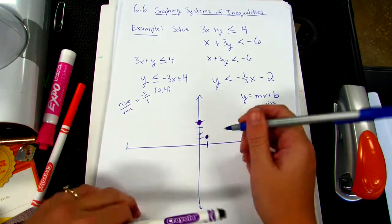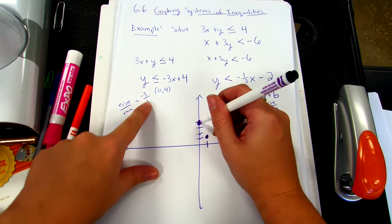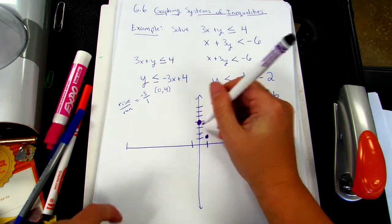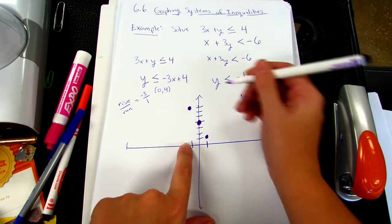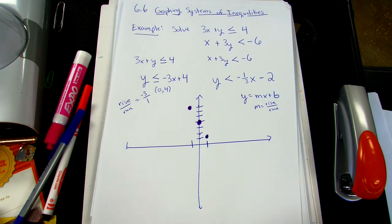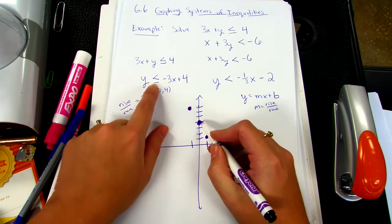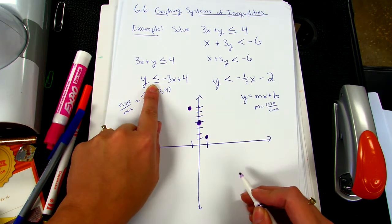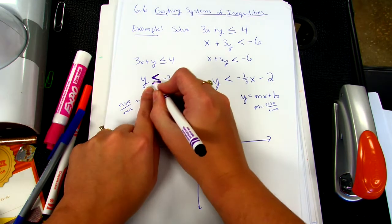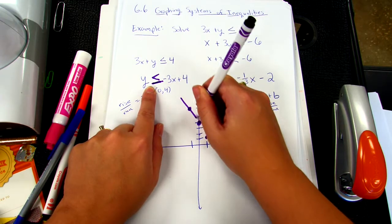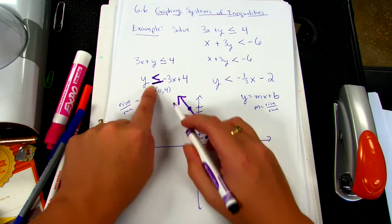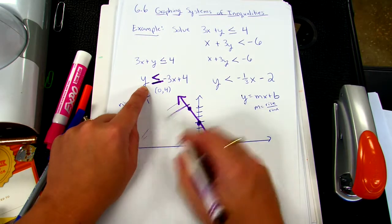Now go the opposite direction to get a third point. Since I rose negative, now rise positive — up 3 — but since last time I ran right, this time run to the left. Since this is an inequality, is the line part of your answer? Since it is less than or equal to, we connect the dots with a solid line. And since it's less than, we shade everything below.